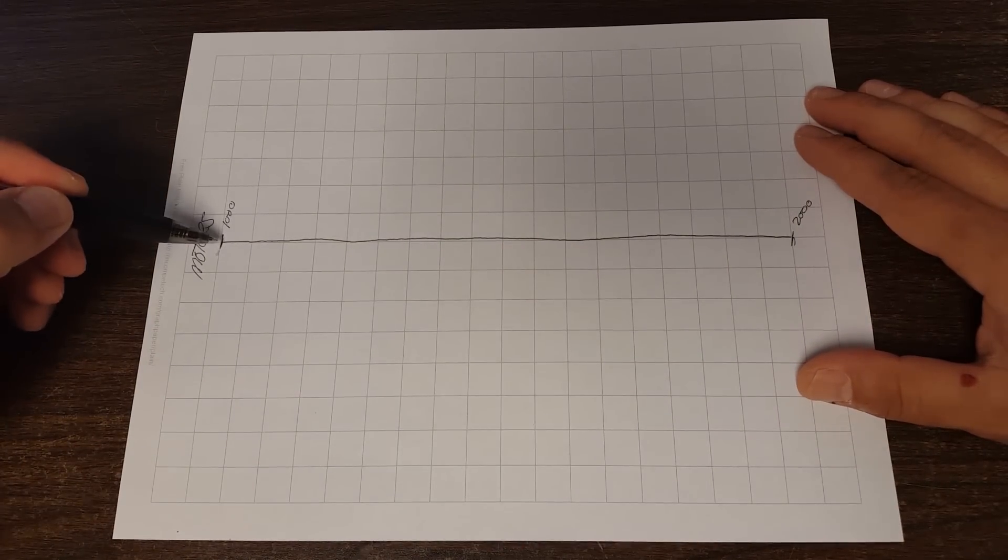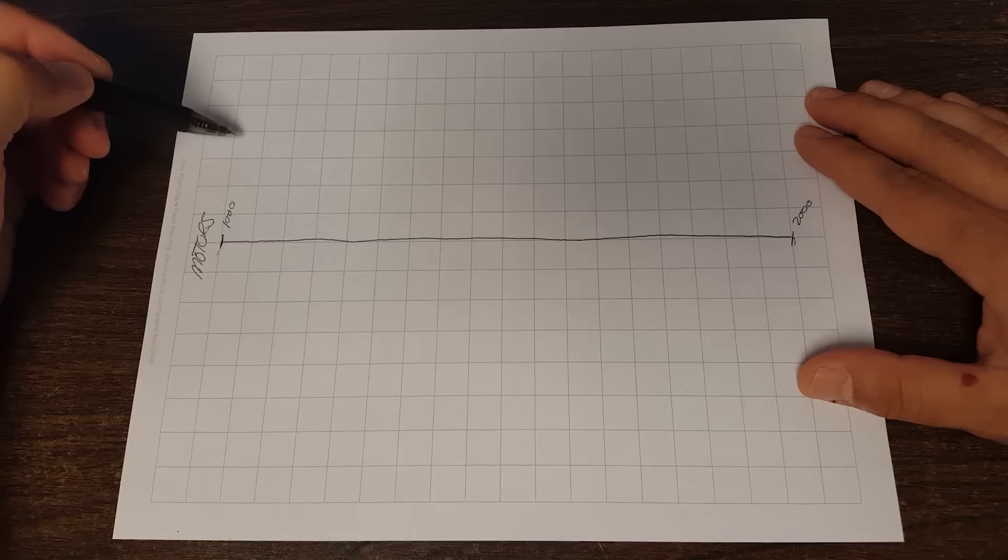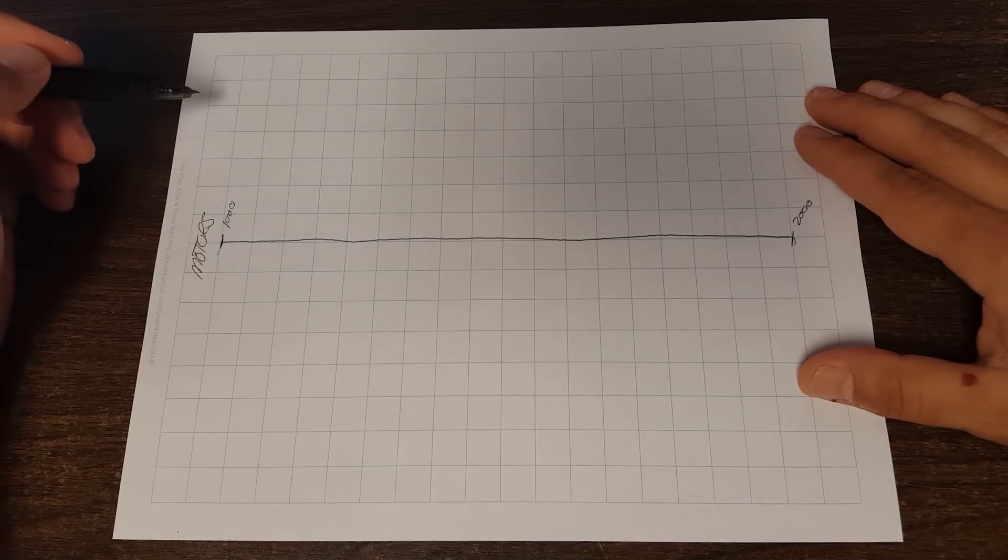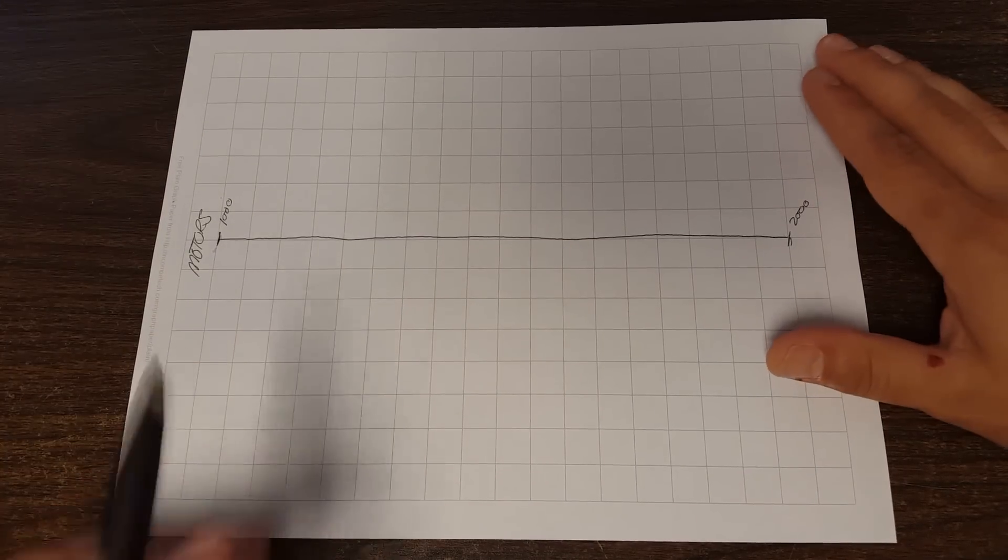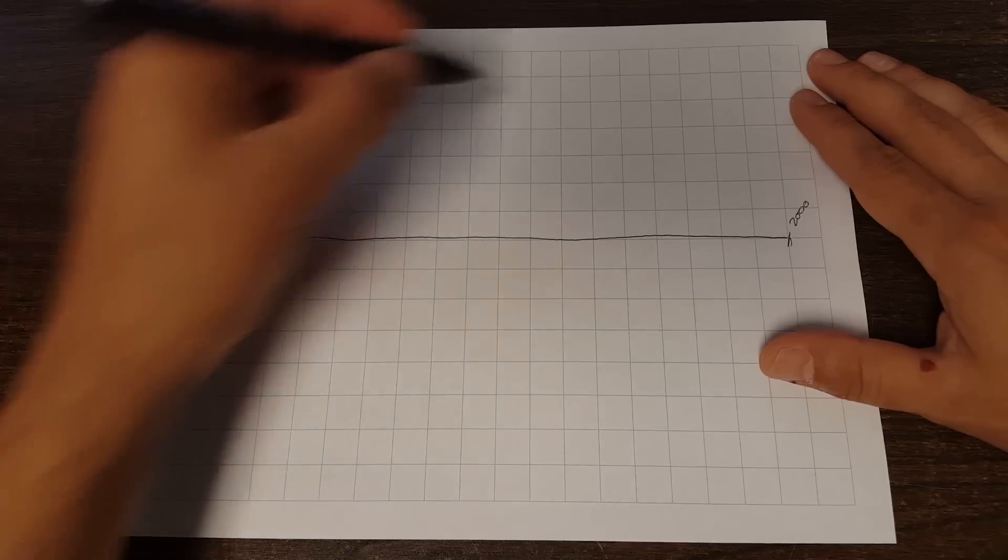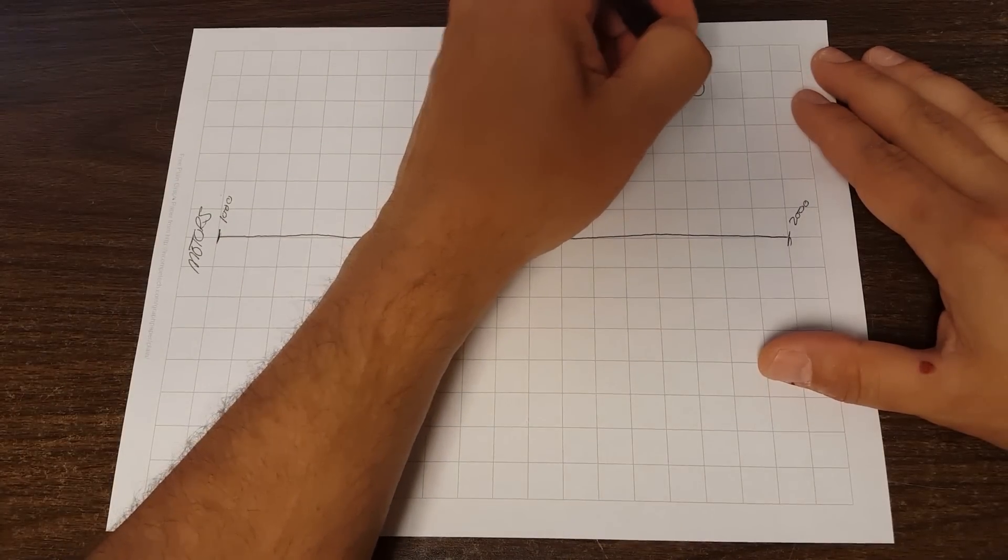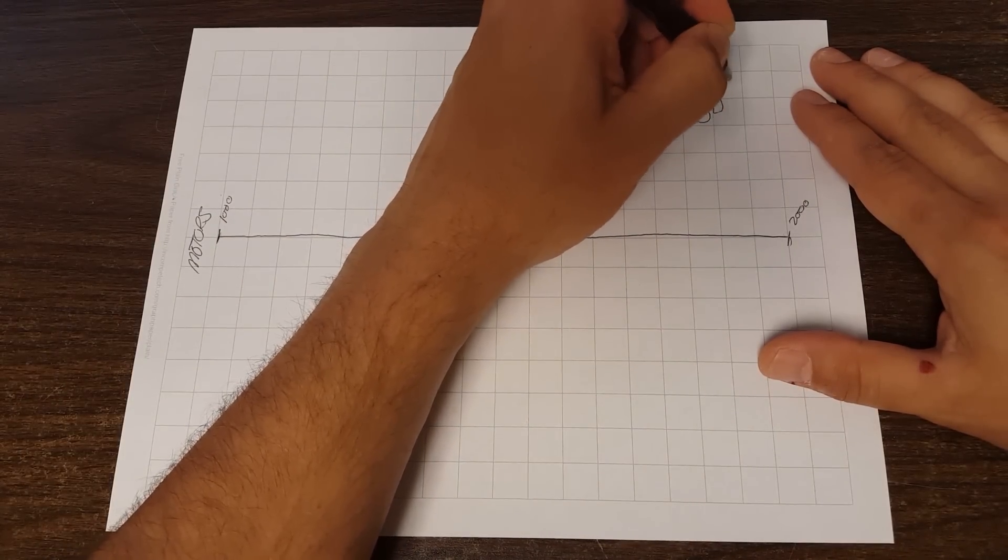What I should really do is draw four of these lines because you have four motors, but I'm not going to do that because it would be a lot of drawing. So if you've got a quadcopter, it's got four motors, right?